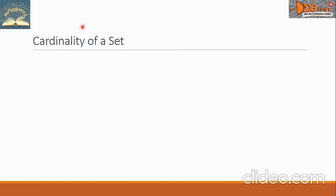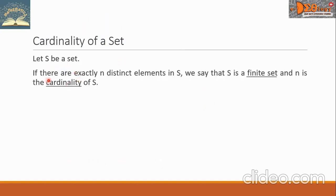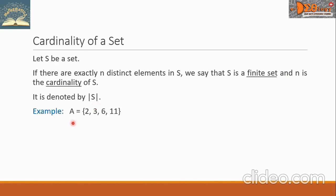Let us now study cardinality of a set. Let S be a set. If there are exactly N distinct elements in S, we say that S is a finite set, and N is the cardinality of S. It is denoted by S enclosed in two bars. For example, set A has elements {2, 3, 6, and 11}, then the cardinality of A equals 4, and we can see there are 4 elements in A.